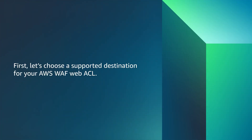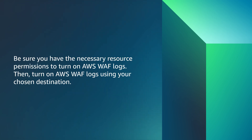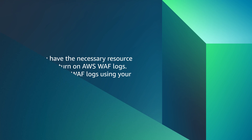First, let's choose a supported destination for your AWS WAF WebACL. AWS WAF supports the following log destinations: a log group from Amazon CloudWatch Logs, an S3 bucket from Amazon Simple Storage Service, or a stream from Amazon Kinesis Data Firehose. Be sure you have the necessary resource permissions to turn on AWS WAF logs, then turn on AWS WAF logs using your chosen destination.